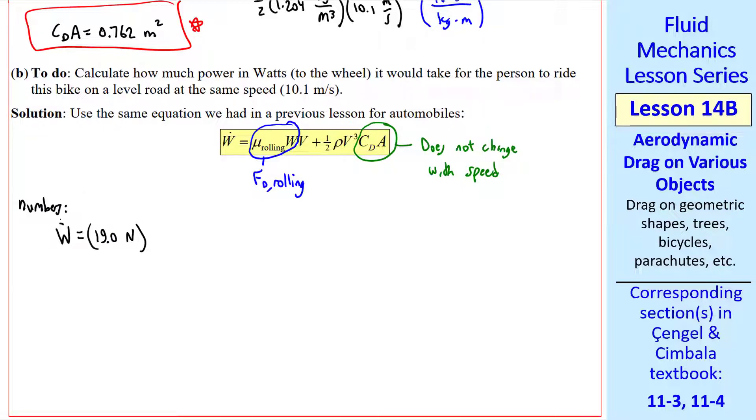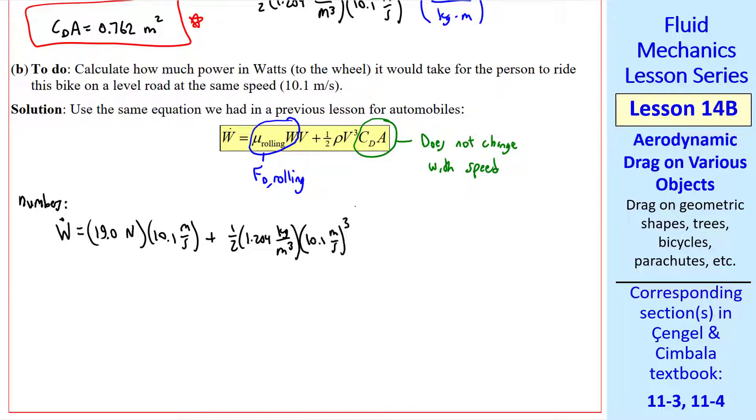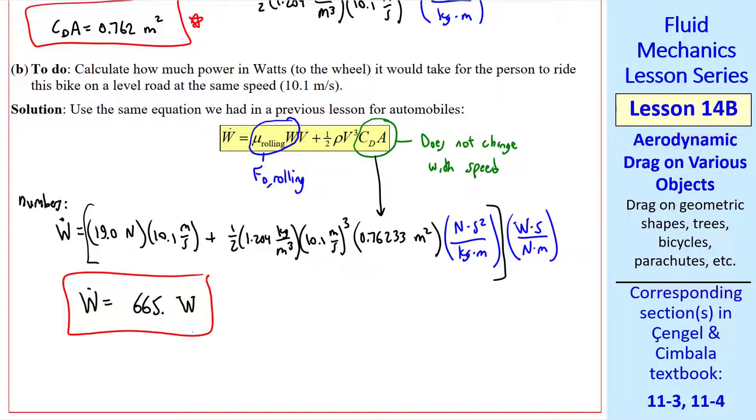Plugging in the numbers, we have rolling resistance times speed v, plus one half rho v cubed and our CDa from part A, where I've used a few more digits to avoid round off error. Our unity conversion factor, and another one to get watts. We get 665 watts. For those of you who like English units, this is about 0.89 horsepower. Most people can't even produce this much power, but some racing riders may be able to do it for a short time.